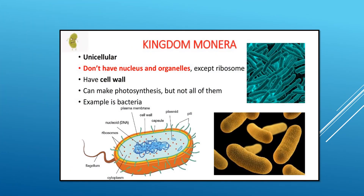The characteristics of kingdom Monera: all living organisms in kingdom Monera are unicellular and do not have a nucleus with bound cell organelles. Some are autotrophic — they prepare their own food — and some are heterotrophic. These are prokaryotic living organisms. For example, bacteria.